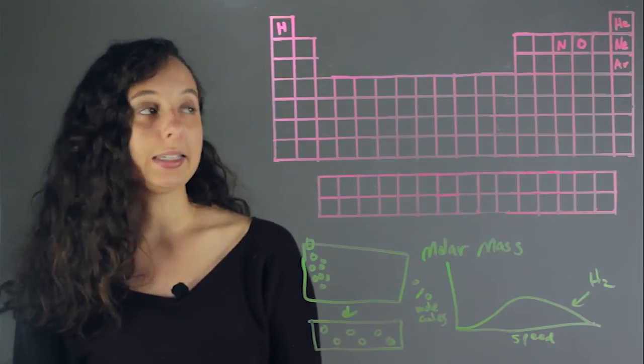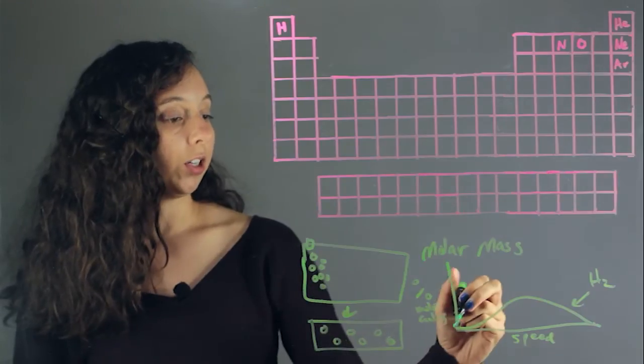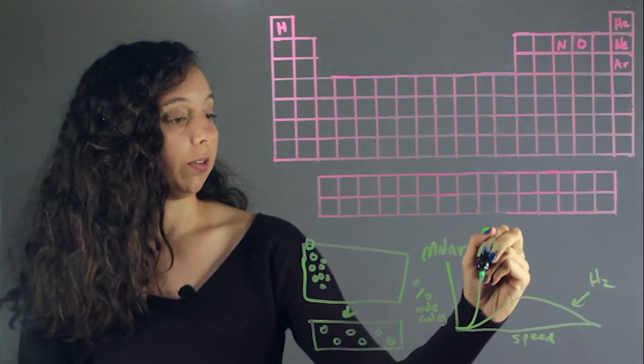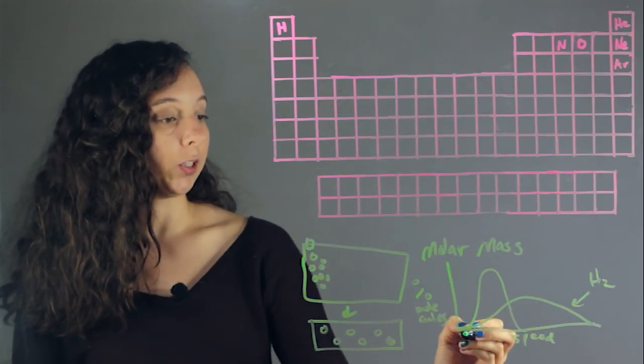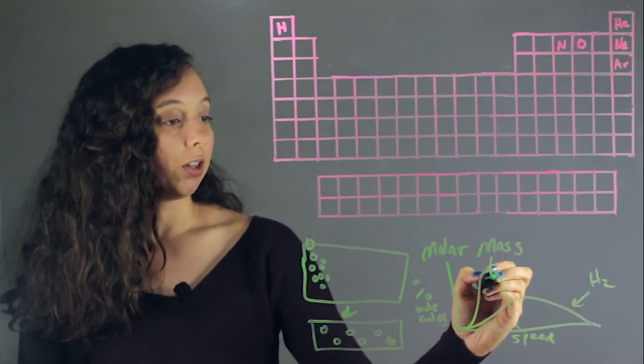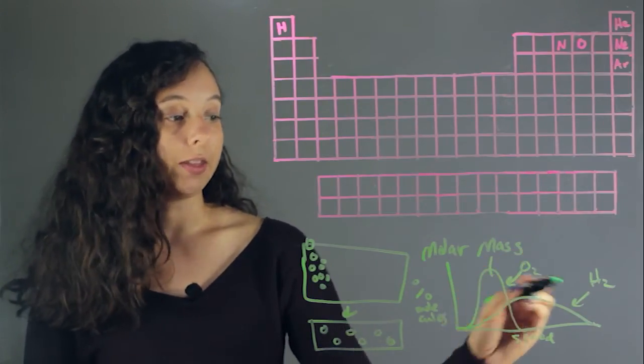Now let's pick another gas like O2, oxygen gas. Now, oxygen gas speed is going to look like this. And so we can tell if this is a higher speed, this is a lower speed. On average, the oxygen atoms are going a lot slower than the hydrogen atoms.